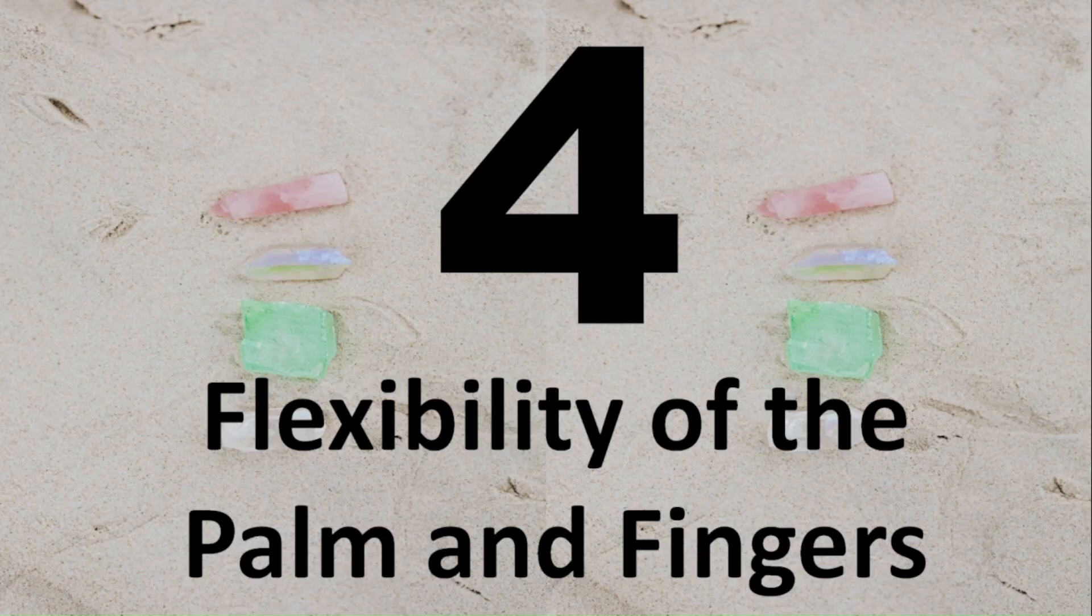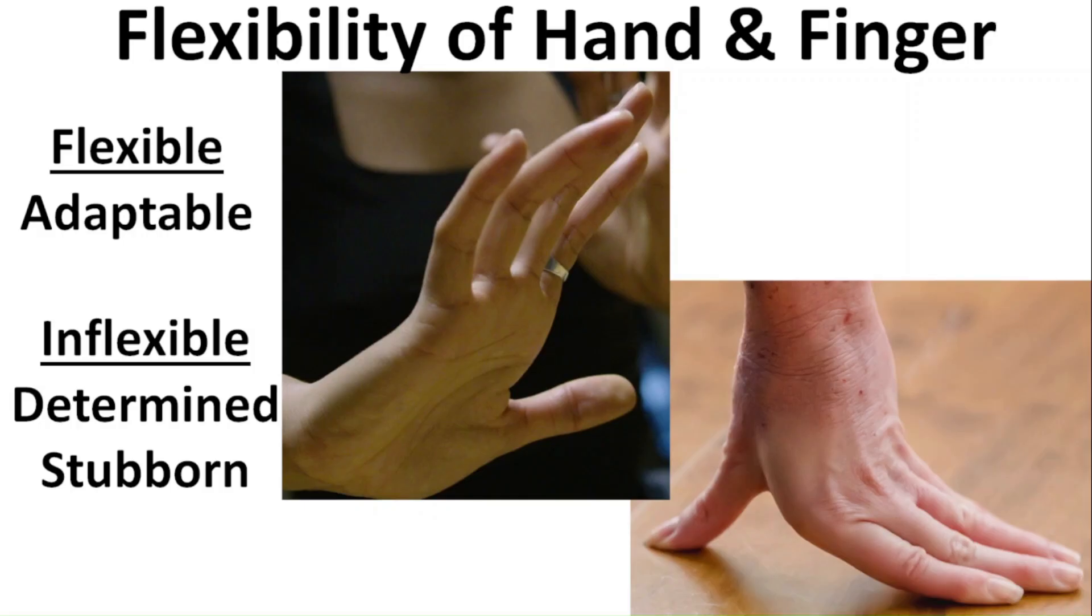Number four. Flexibility of the palm and fingers. The best way to assess whether a hand is flexible is by bending the fingers backwards to see if it is supple. Note that both hands can have different flexibilities.